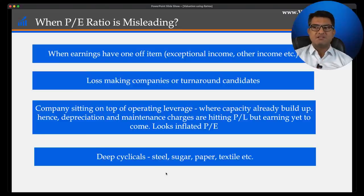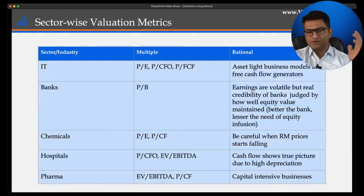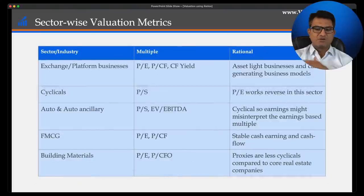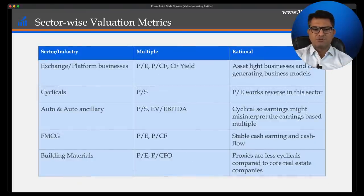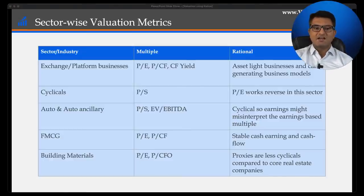For cyclicals, high PE is often a good indicator to sell, and low PE is often a good indicator to buy — the exact opposite of conventional wisdom. Regarding which metrics to use: for IT companies use PE or price-to-CFO or price-to-free-cash-flow; for banks use price-to-book value; for hospitals there are specific metrics. I've shared the rationale for each valuation multiple — please pause the video and screenshot this section for reference.